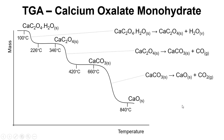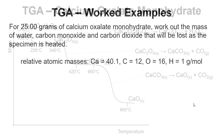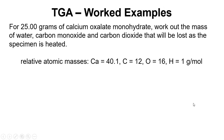We have these balanced chemical equations for the loss that's happening at each stage. Now if we have a 25 gram sample of calcium oxalate monohydrate, the problem is that we want to work out the mass of water, carbon monoxide, and carbon dioxide that will be lost as the specimen is heated.